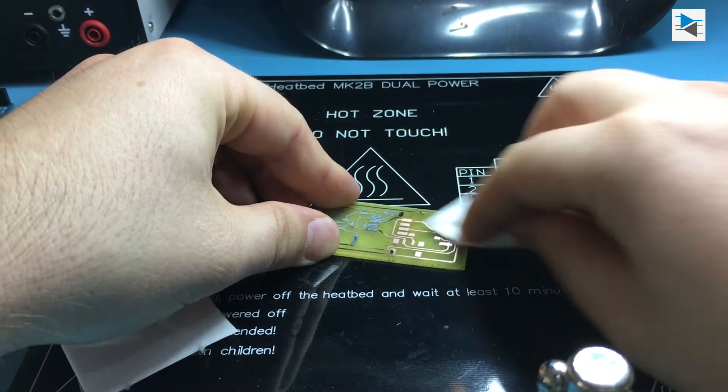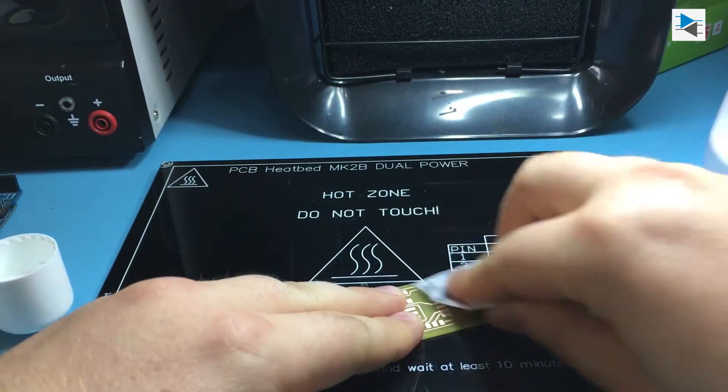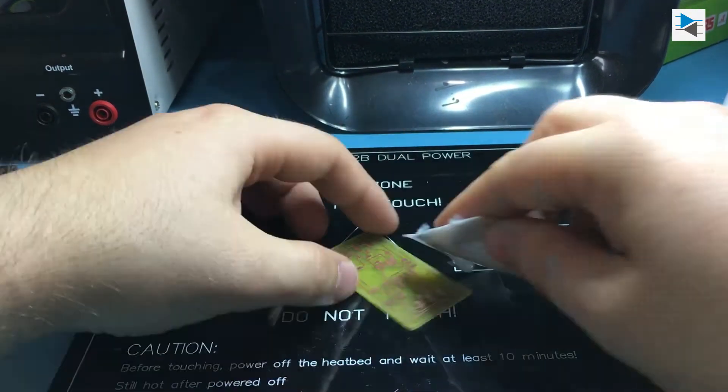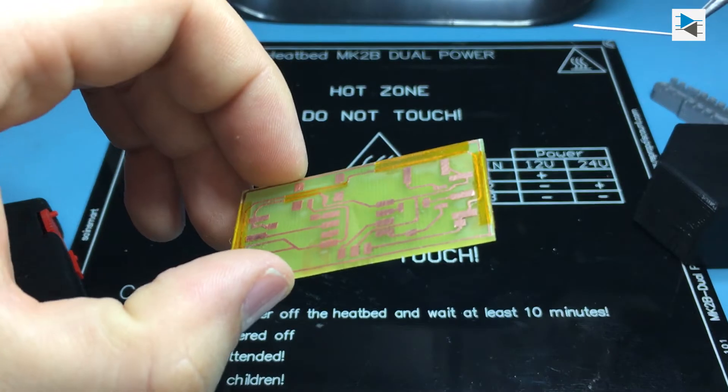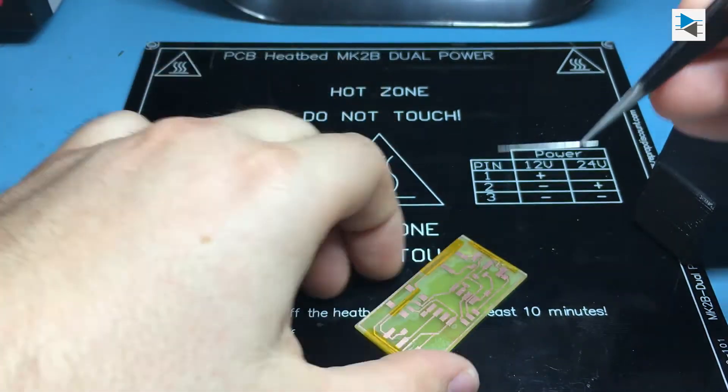Using simple nail polish remover is a very effective method of getting the toner off the copper, thus revealing the shiny traces. As the board doesn't have a solder mask, Kapton tape is used to cover up traces that are in danger of being shorted by other components.